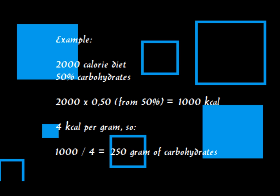It is a lot better to take 50 to 60% of the amount of energy from carbohydrates. Here is an example of how you can calculate the amount of carbohydrates that you need. If you have a 2000 calorie diet and you need 50% from carbohydrates, that is 2000 times 0.5, which makes 1000 calories. At 4 calories per gram, 1000 divided by 4 equals 250 grams of carbohydrates.